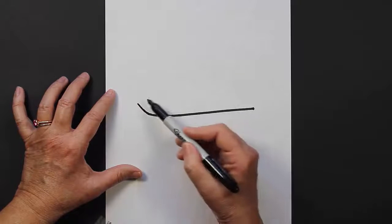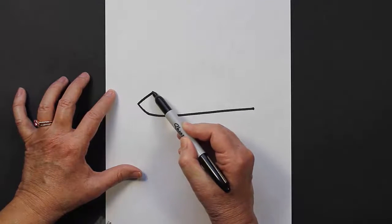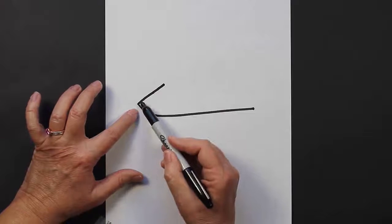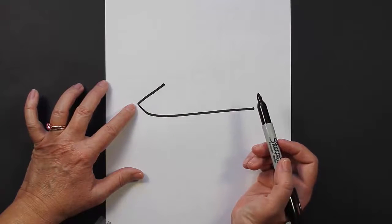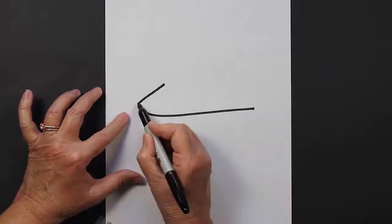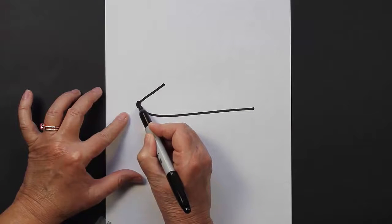You're going to come up with a straight line maybe an inch and a half or two, maybe two to three centimeters. Now what we're going to do is make a nose, just a round circle and fill it in.